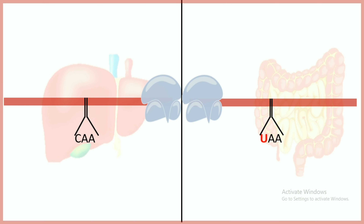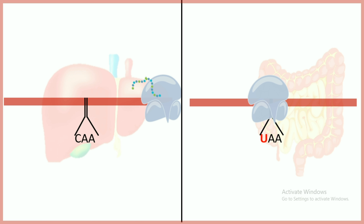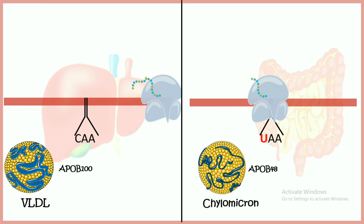In the liver, the complete protein would be produced, whereas in the intestine there would be translation of only a partial sequence of the mRNA, and a truncated protein would be produced. This explains the difference between ApoB48 and ApoB100 — the stop codon arises due to a deamination reaction triggered by cytidine deaminase present in the intestine.